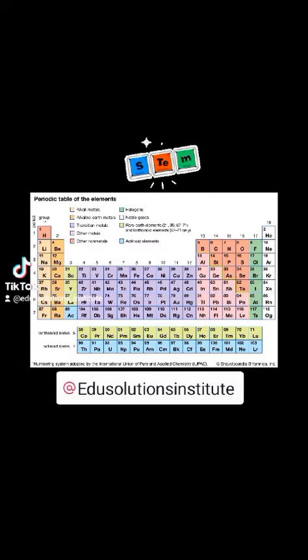Now as you can see this periodic table has columns, right, and they have different rows. Now the columns are collectively called groups.